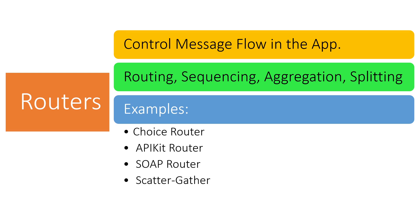You can route to additional message processors or a sub-flow depending on your implementation. There is also the APIkit Router and SOAP Router, used for RESTful and SOAP web services respectively — routing based on resource and method for REST, and endpoint and method type for SOAP. The Scatter-Gather Router is used for splitting messages, processing them in parallel, and then combining the results. Videos on choice routers, scatter-gather, and SOAP router are already available on this channel.